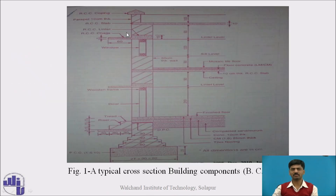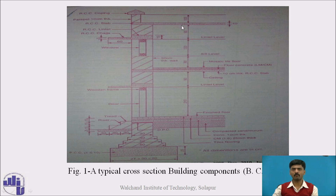Let's observe this picture very carefully. This is the cross section of building components. There is plain cement concrete, footing — it may be RCC footing or wall footing. This is plinth filling, doors, a lintel, chajja, slab. This symbol indicates brick masonry wall, then window, slab, and above that flooring. Similarly, your first floor — this is a slab on the top floor, parapet wall and coping. This is the front elevation or cross section of a building component. Let's discuss the remaining points one by one.